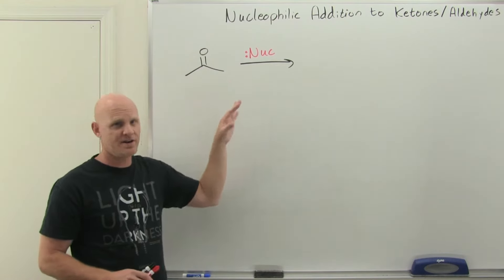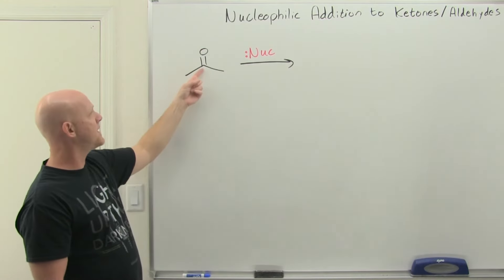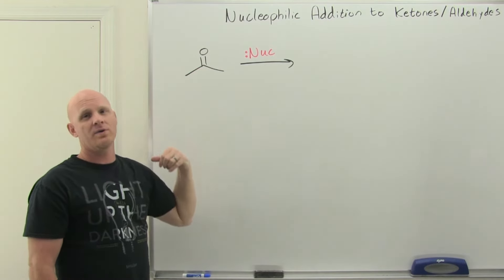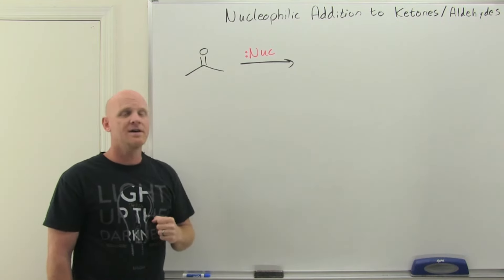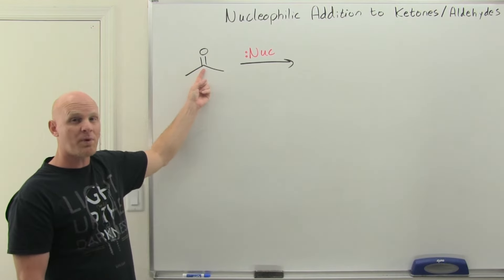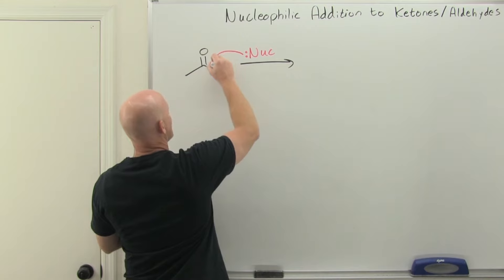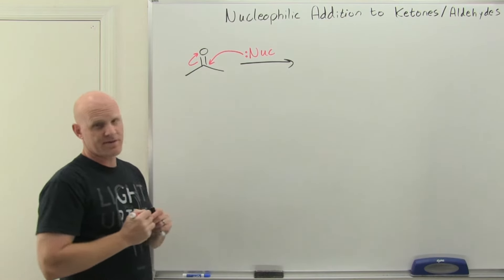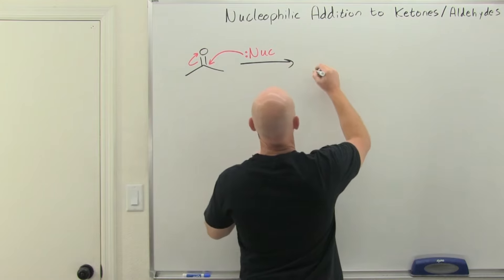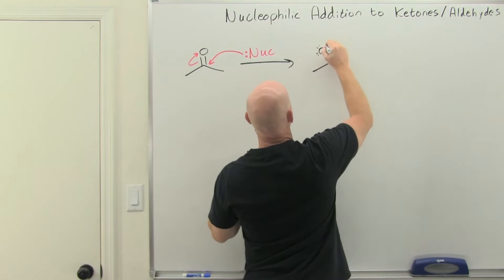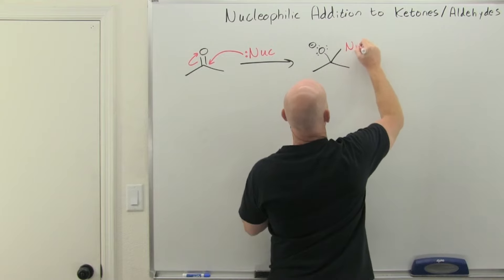Taking a generic look at nucleophilic addition: this carbonyl carbon has a partial positive charge, making it electrophilic. A carbon-oxygen double bond is much more polar than a carbon-oxygen single bond, resulting in significantly more partial positive charge on that carbon. A generic nucleophile can perform nucleophilic attack — attaching to that carbon — and to make room for the new bond, we push the pi electrons up to the electronegative oxygen, leaving it temporarily with a negative charge.